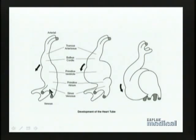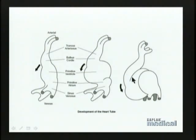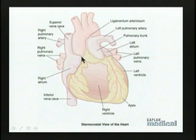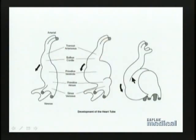Originally the veins were caudal to the heart and the arteries were cranial to the heart. We end up with the veins coming into the back of the heart and the arteries leaving from the front of the heart—and that is indeed the adult structure. The arteries leave from the front of the heart, and the veins go into the back wall of the heart. That adult structure is based upon this S-shaped curve of the heart, and it has given us the basic structure of the adult heart.